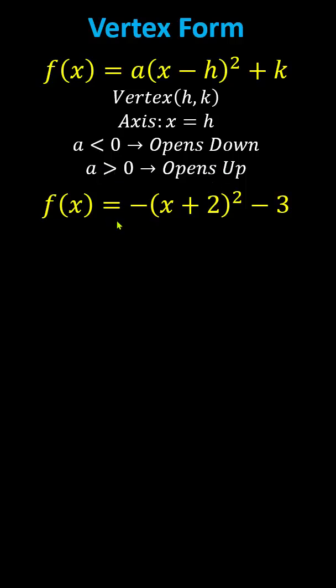For example, if we have f of x equals the opposite of the square of x plus two minus three, the vertex is negative two comma negative three.